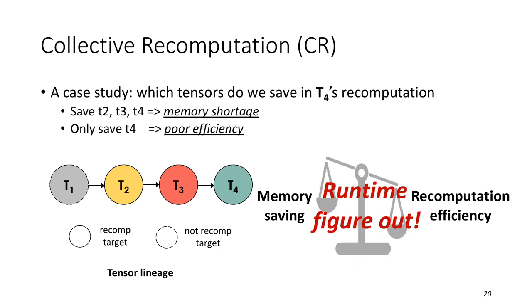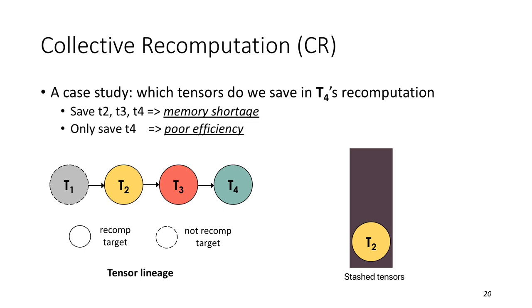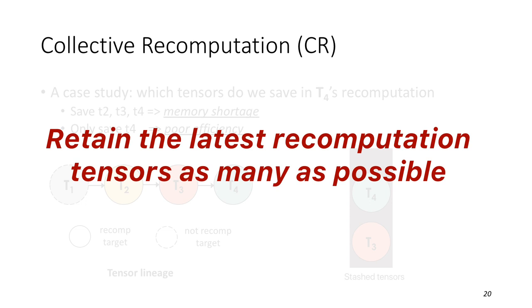In this example, at T4's recomputation, T2 will be first generated and it will be stashed in GPU memory. When T3 has been generated, we will also keep it if there is memory. However, when proceeding to compute T4, there is no memory for it. Then we will drop T2 to make space for T4. Finally, T3 and T4 will be kept. In summary, collective recomputation will retain the latest recomputation tensors as many as we can in one recomputation.